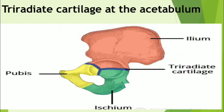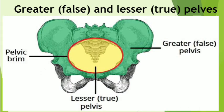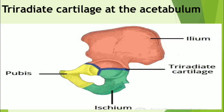The two hip bones are joined anteriorly at the pubic symphysis and articulate posteriorly with the sacrum at the sacroiliac joints to form the pelvic girdle. The ilium is the superior fan-shaped part of the hip bone. It has an ala — the wing — which represents the spread of the fan, and also has a body. The ilium is well illustrated in the diagram.